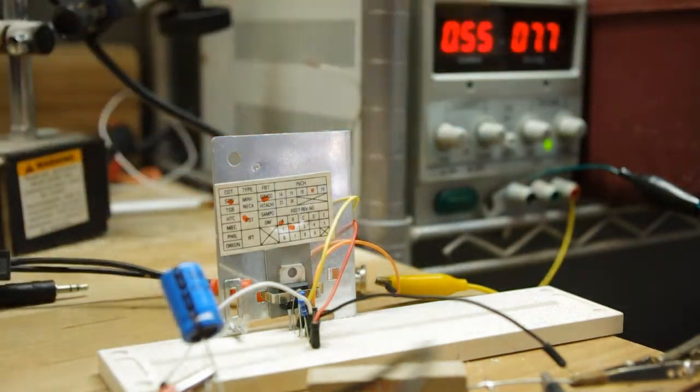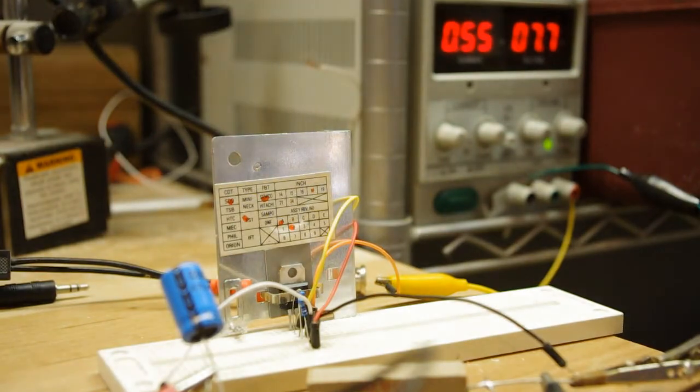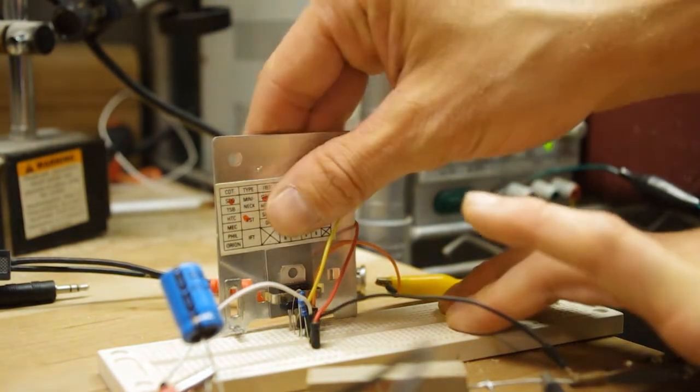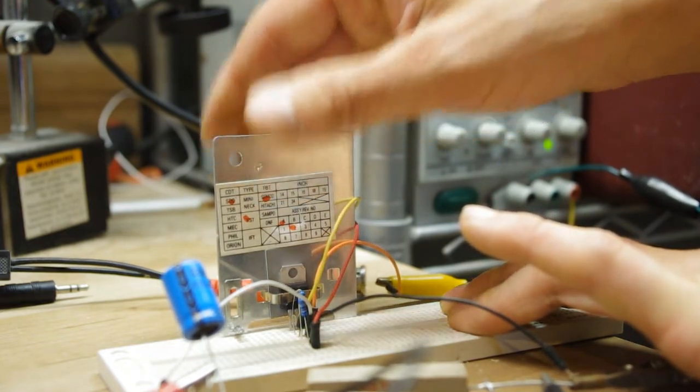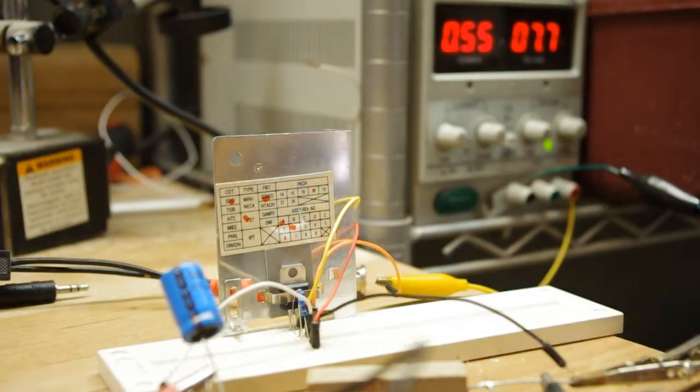After running this for a little while, the heat sink is warm, it's not hot at all, I can touch it indefinitely. And that's at 7.75 volts. I'm gonna go ahead and raise the voltage up and just kind of see what happens.